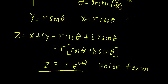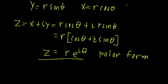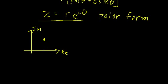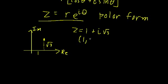There are benefits to each form and no form is strictly better — it really depends on the context. Let's do one example to highlight all the different ways we can describe complex numbers. We have a point where the real component equals 1 and the imaginary component equals √3. So we can immediately say Z = 1 + i√3, and describe it with the coordinate (1, √3).